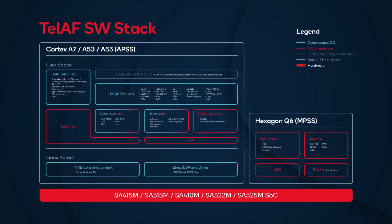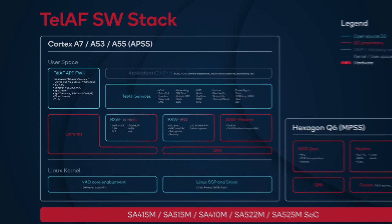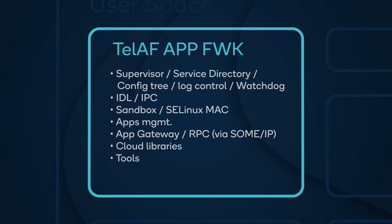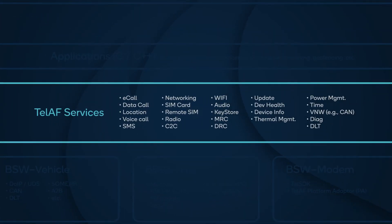The whole framework is based on a microservices architecture, so each of these TelAF services runs independently. All of the services provide a unified interface to external application usage via IPC. The box labeled TelAF App Framework lists the core services essential to the framework, and the box labeled TelAF Services lists the telematics-oriented business services or platform services.